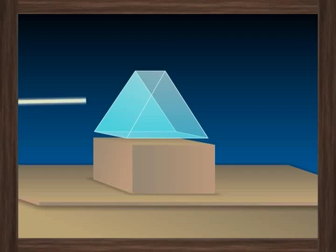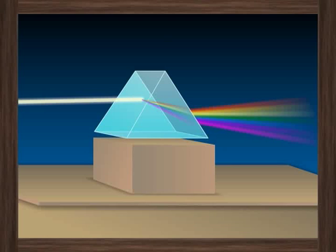The light undergoes refraction twice when it passes through two surfaces of the prism. Once when the light enters the prism and then when the light leaves the prism.